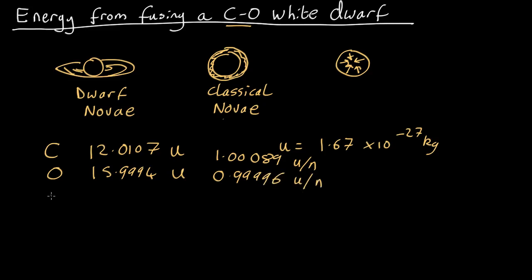But if you look for iron, it's got a mass of 55.845 U, which comes out as 0.9972 U per nucleon. Now that may not sound like a very big difference.